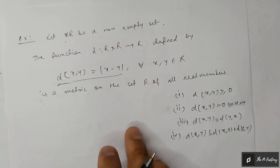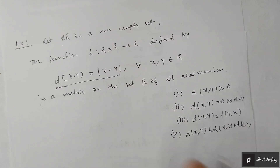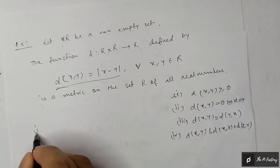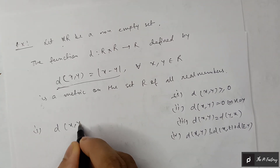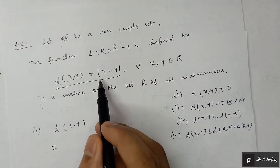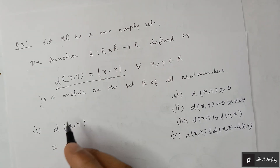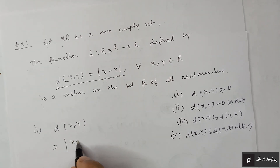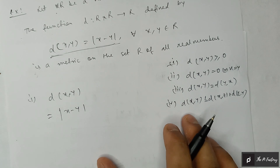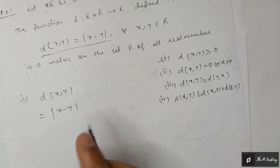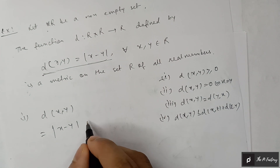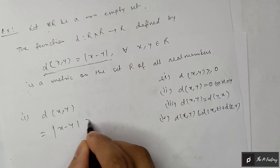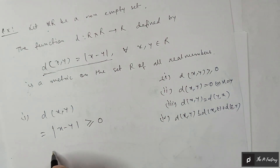For the first condition: d(x, y) equals the modulus of x minus y. We know this function cannot be negative, so this is obviously greater than or equal to zero. The first condition is fulfilled.